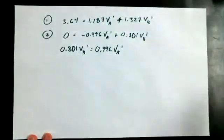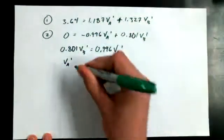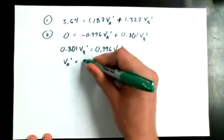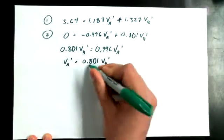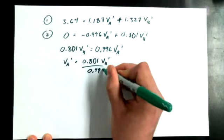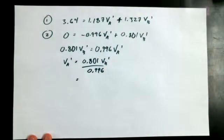And the voting class was to get VA-primed all by itself. So we could say that VA-primed, based on that line, is going to be equal to 0.801 VB-primed over 0.996. What's the coefficient that should go on that VB-primed then?